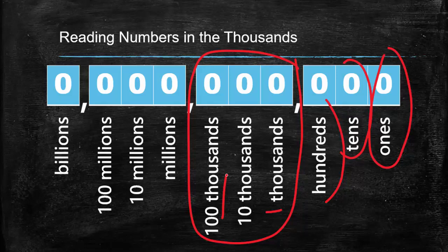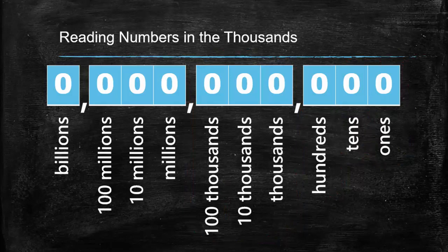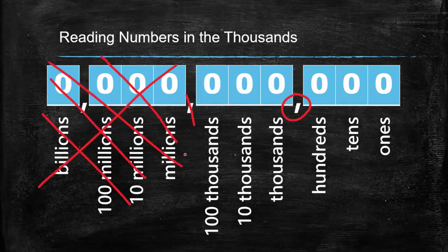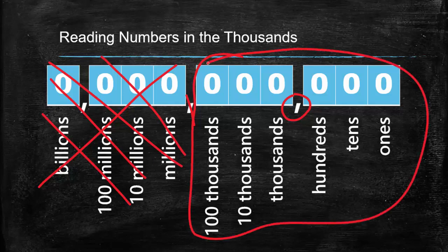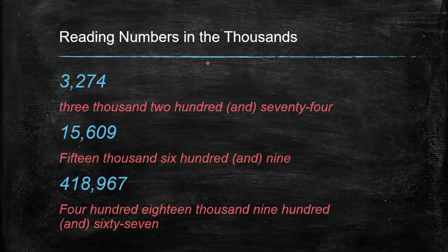What really helps with knowing how to read a number is to look out for the commas. In the thousands, there's only one comma. So let's focus on the thousands and see how we can read some of these numbers.